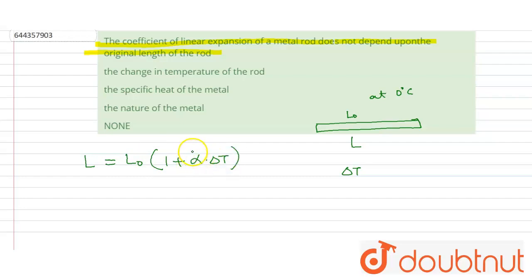Here alpha is the coefficient of the linear expansion. Alpha is equal to coefficient of linear expansion and it depends upon the nature of the metals. For different types of metals, the coefficient of the linear expansion is different. So it does not depend upon the temperature of the rod and specific heat of the rod.